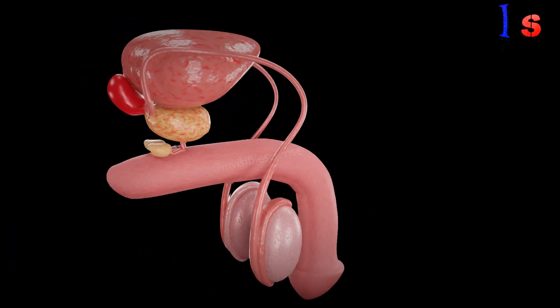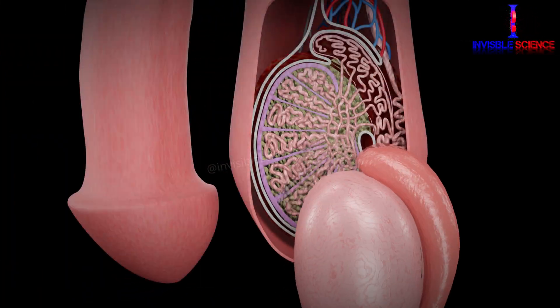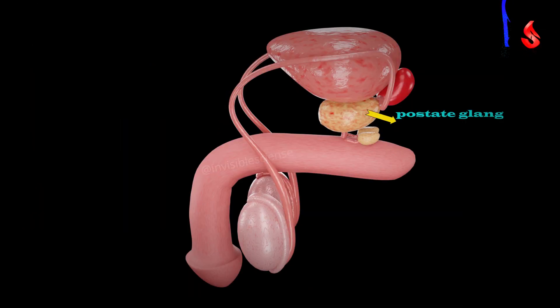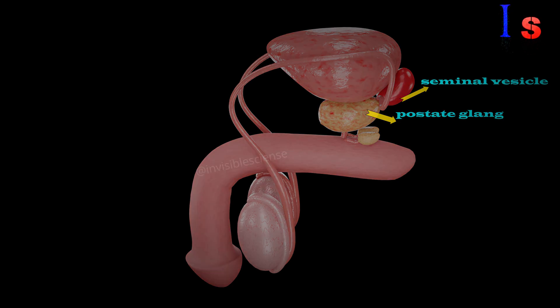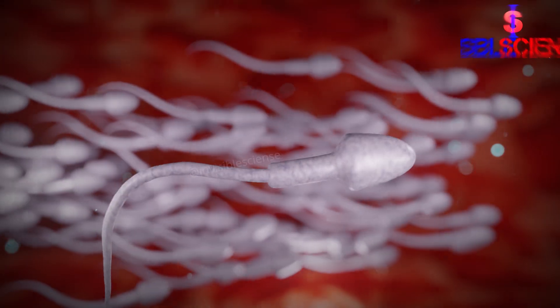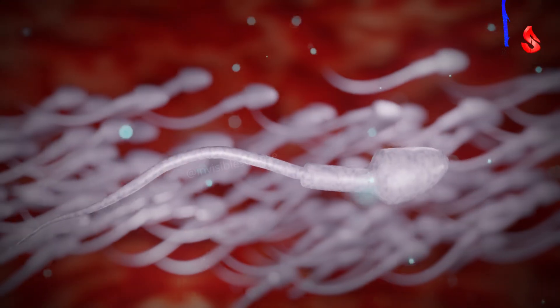The male reproductive system is composed of several organs, including the testes, epididymis, vas deferens, prostate gland, and seminal vesicles. It is responsible for producing and transporting sperm cells to the female reproductive system during sexual intercourse.